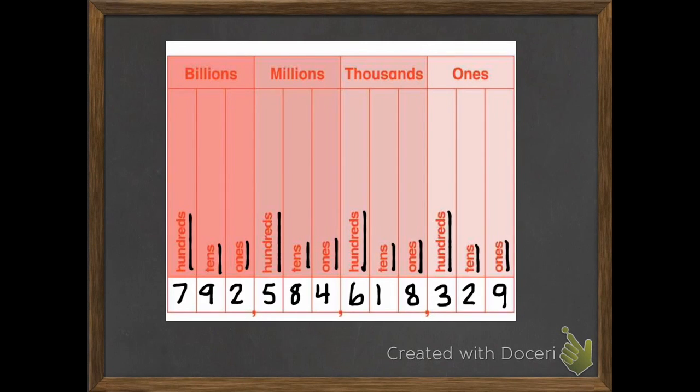If I write a very large number, this may look a little intimidating at first, but these periods really make it easy to write and to say, because we really just have to break it into three digits at a time. If I was going to say this number, I would say 792, and then I hit a comma.